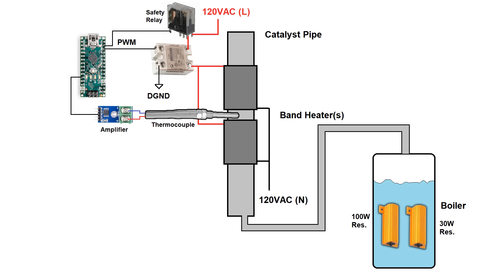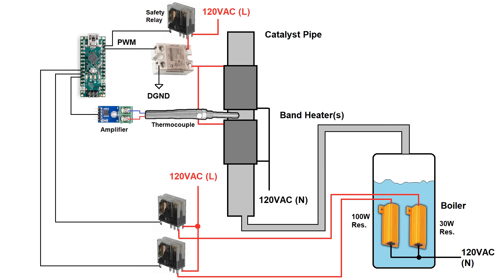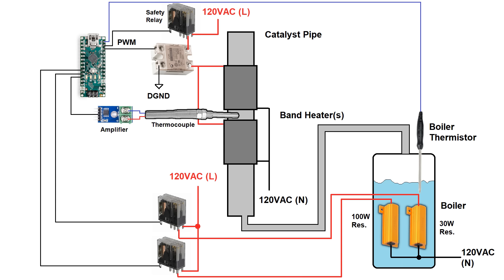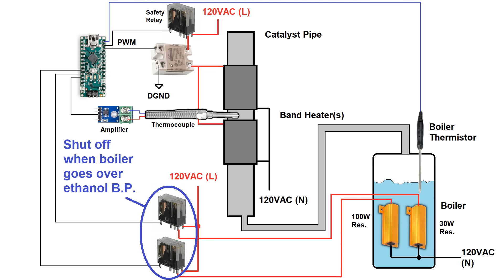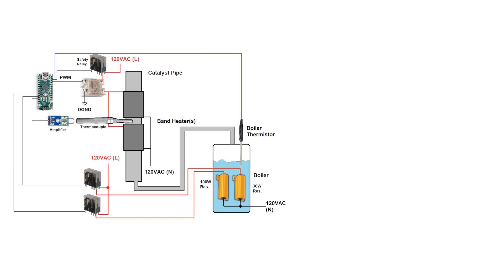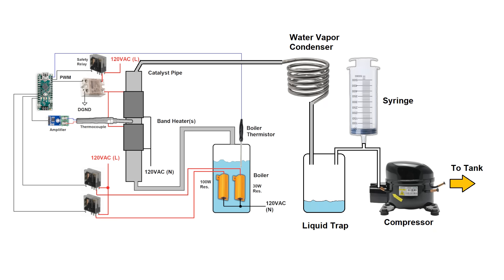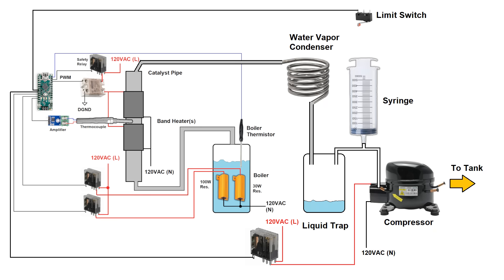The 100-watt heater jump-starts boiling but might provide too much ethanol vapor for the catalyst, so once the liquid gets up to a boil it shuts off and the 30-watt heater takes over. These heaters are turned on and off by relays controlled by the Arduino. When the ethanol runs out but heaters are still on, the temperature inside the boiler rises above the boiling point of ethanol, detected by a thermistor inside the bottle, which triggers a shutdown. Water, ether, or unreacted ethanol collect in a liquid trap, and gas fills a 500 ml syringe. When the syringe is full, it hits a limit switch that turns on the compressor to pump ethylene into a holding tank.